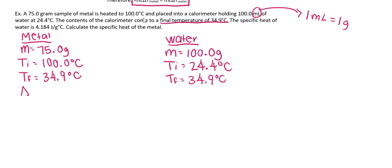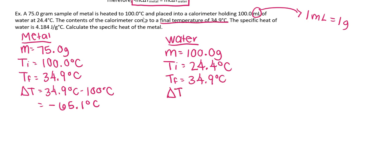I'm going to calculate delta T right away. Delta T is T final minus T initial. The change in temperature of the metal is negative because the metal is decreasing in temperature. Doing the same for water — final minus initial — the change in temperature of the water is 10.5 degrees Celsius.